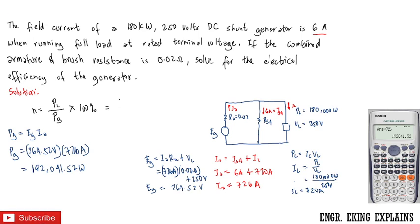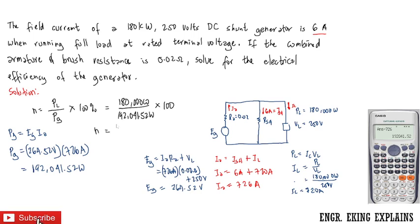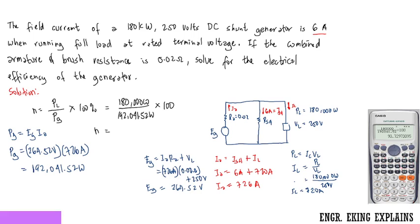Now we solve for efficiency: PL over Pg times 100, which is 180,000 watts divided by 192,041.52 watts, times 100. The efficiency equals 93.73 percent. This is our final answer.